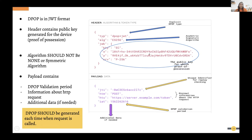If it is a token request, htm and htu will contain the token endpoint and the request method. If it is an API call, they will contain the API endpoint and method. There is also 'iat' (issued at), which functions as the expiry time. The DPoP expiry time should be very short — less than one minute — as specifically mentioned in the specification.